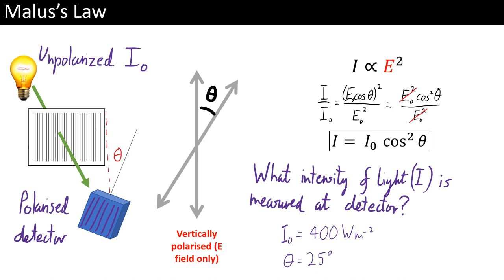So the question here is, if the detector is at an angle of 25 degrees, and the initial unpolarized light is at 400 watts per meter squared, what is the intensity measured at the detector? What is I? So see if you can figure it out. Pause the video. Now we'll have a look.